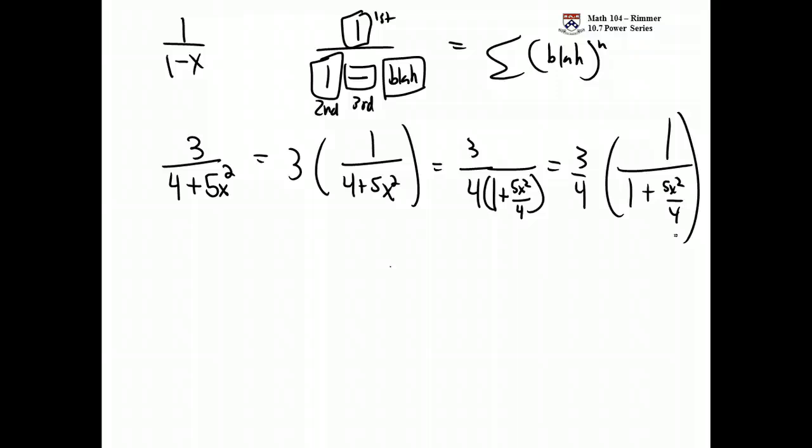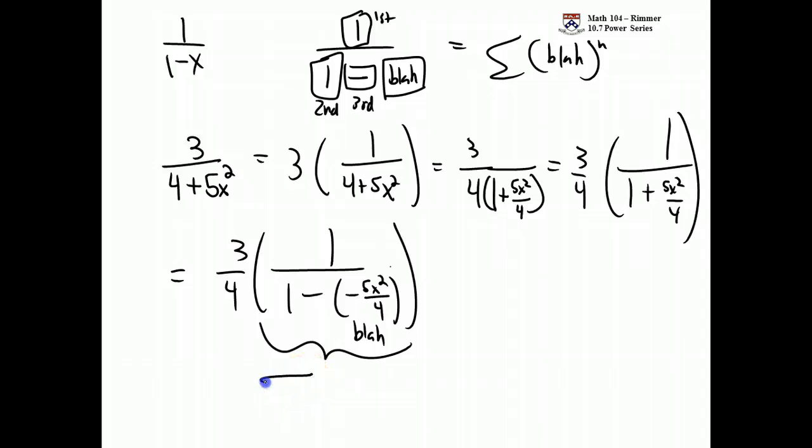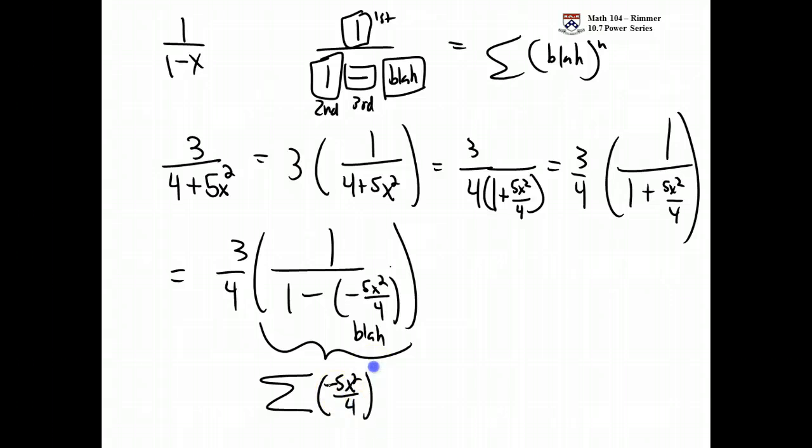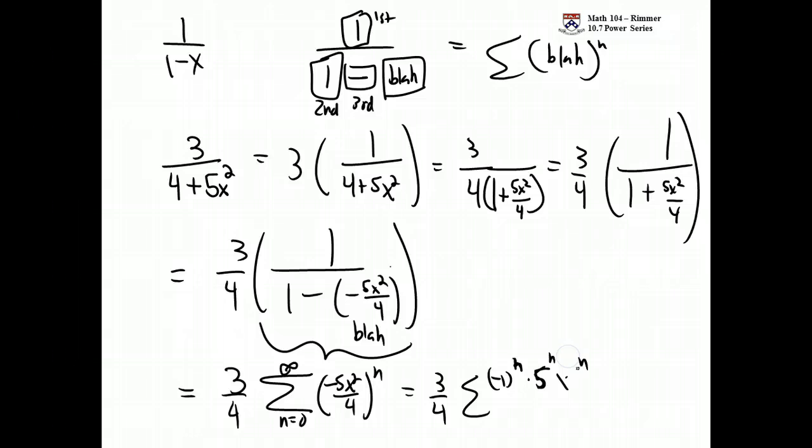Plus, it's going to turn into minus, minus. Great. So I'm going to have 3 fourths, 1 over 1, minus, minus. This is the blah. This is the thing that gets raised to the nth power. And you keep the 3 fourths out there. And if you want, you can separate it up into different parts. Make it negative 1 to the n, 5 to the n, x to the 2n, all over 4 to the n. These things that we're dealing with on our homework, these actually are representations of functions. This guy is equal to the function 3 over 4 plus 5x squared. Start at 0.